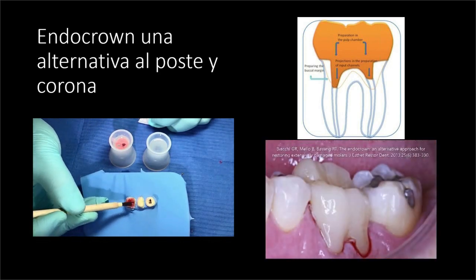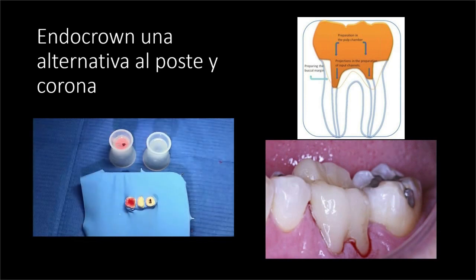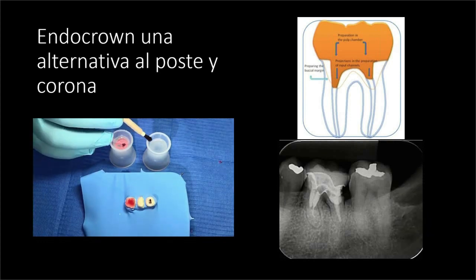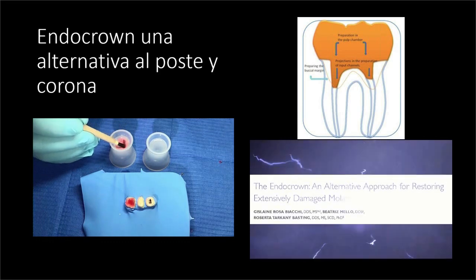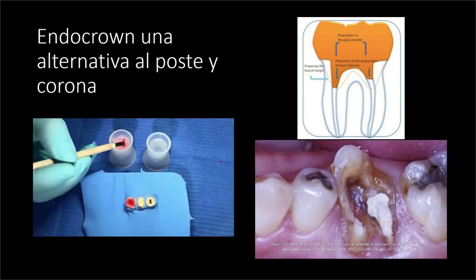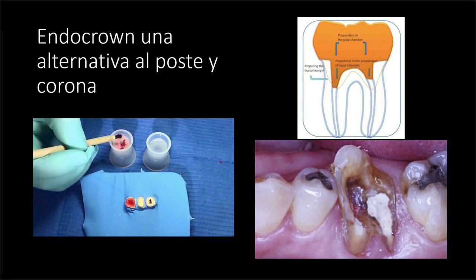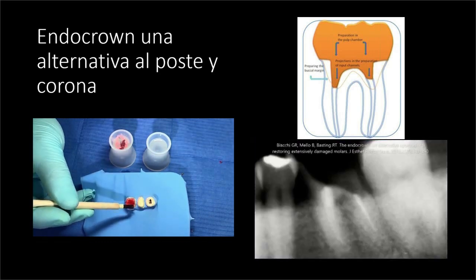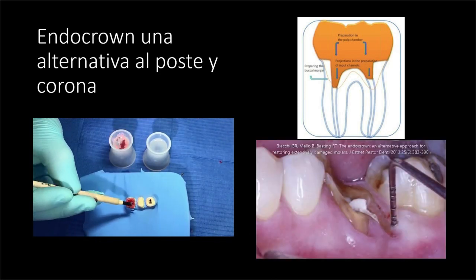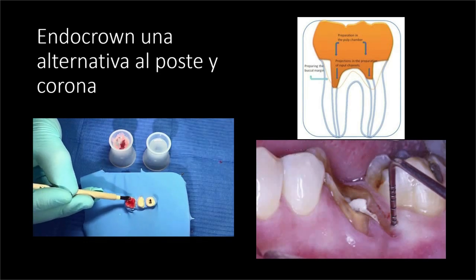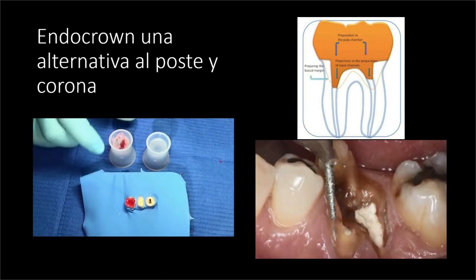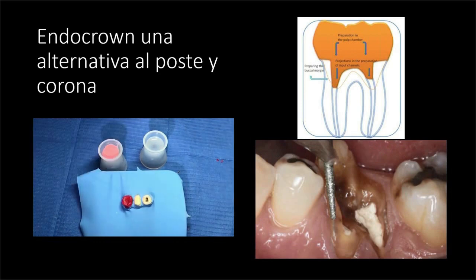Este artículo tiene un éxito de seis años, lo que significa que seis años le evité al paciente haber perdido ese órgano dental y aún no ha fracasado. No sé hasta cuándo vaya a durar. Pero por lo menos son seis años sin un implante, y podríamos pensar que son seis años que el paciente tuvo para ahorrar para un implante, porque la economía en México no está para decirle a todos los pacientes que ya lo perdieron y que se pongan un implante.